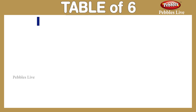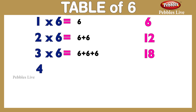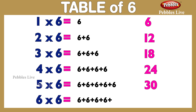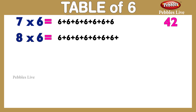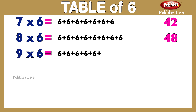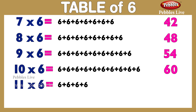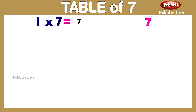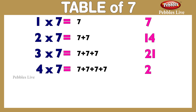Table of 6: 1 six is 6, 2 sixes are 12, 3 sixes are 18, 4 sixes are 24, 5 sixes are 30, 6 sixes are 36, 7 sixes are 42, 8 sixes are 48, 9 sixes are 54, 10 sixes are 60, 11 sixes are 66, 12 sixes are 72.